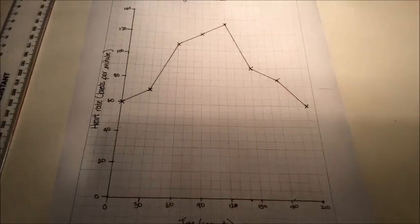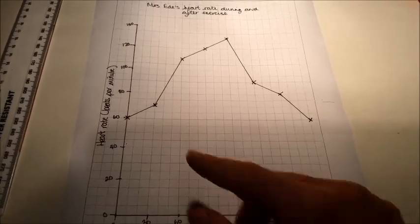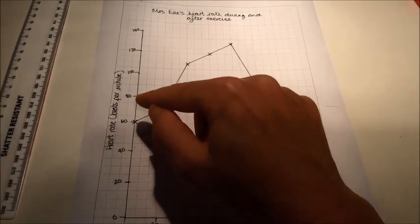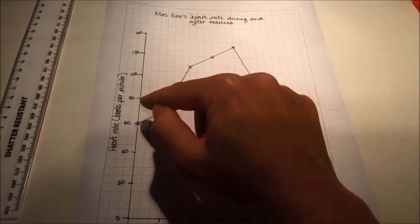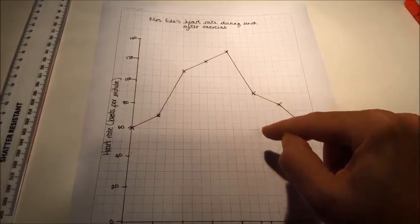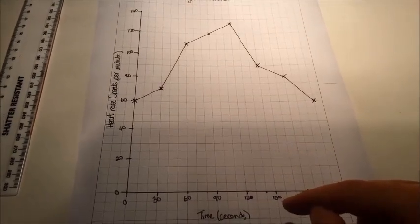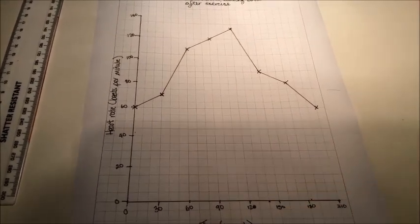I could say to you, at what time was my heart rate 90 beats per minute? So you'd go up here, you'd find where 90 is, which is in between 80 and 100, follow the line across—there it is—follow the line down, and it was 150 seconds my heart rate was 90 beats per minute.